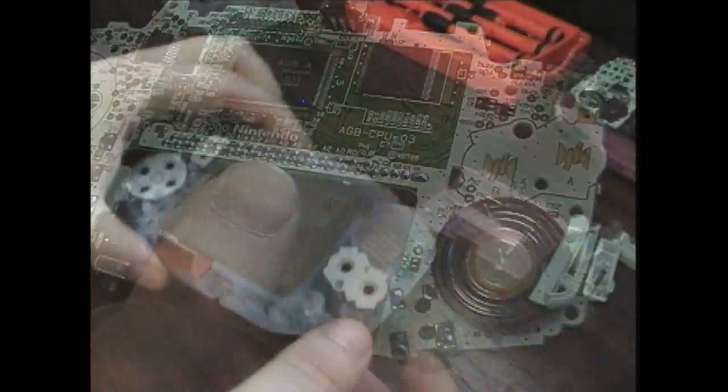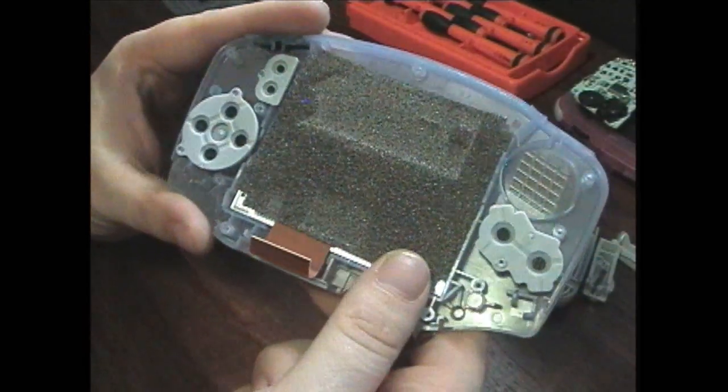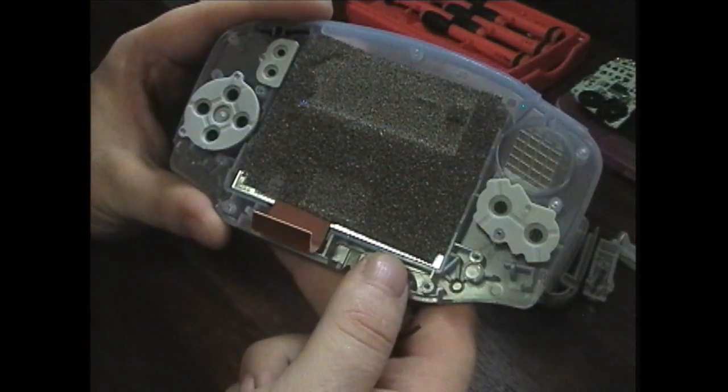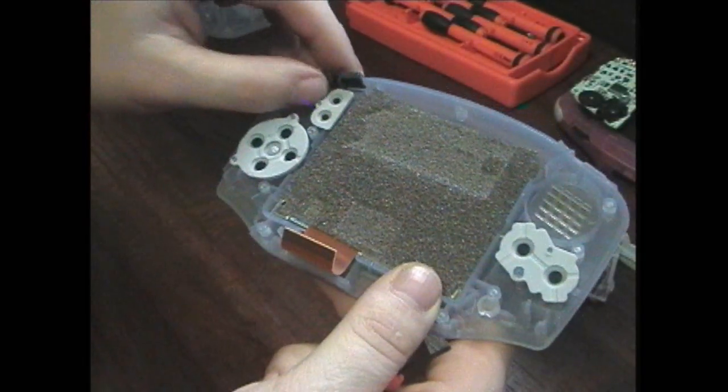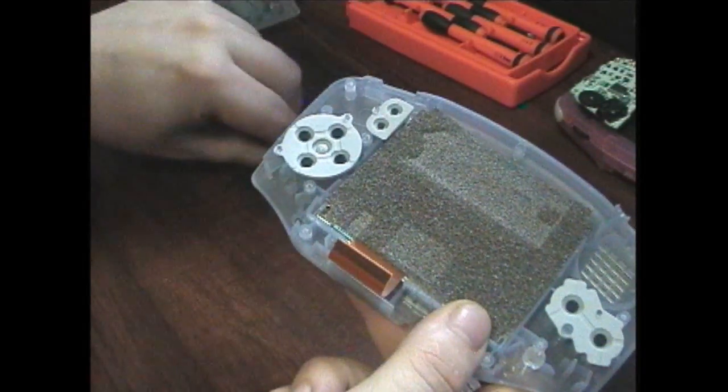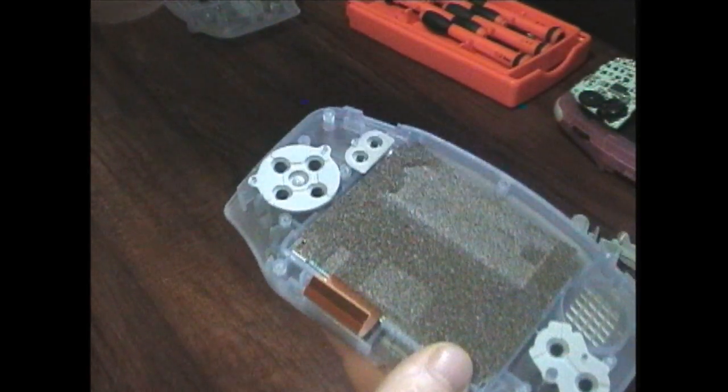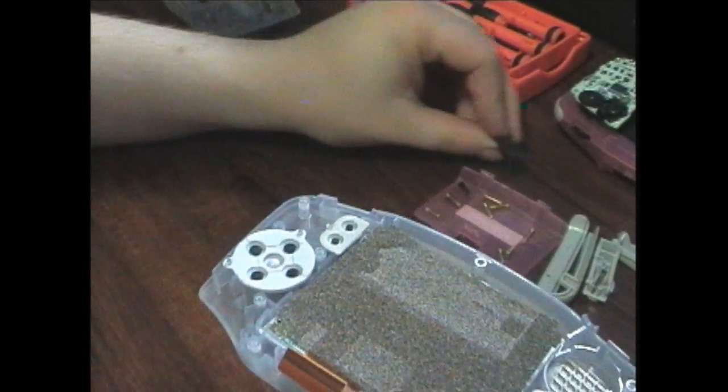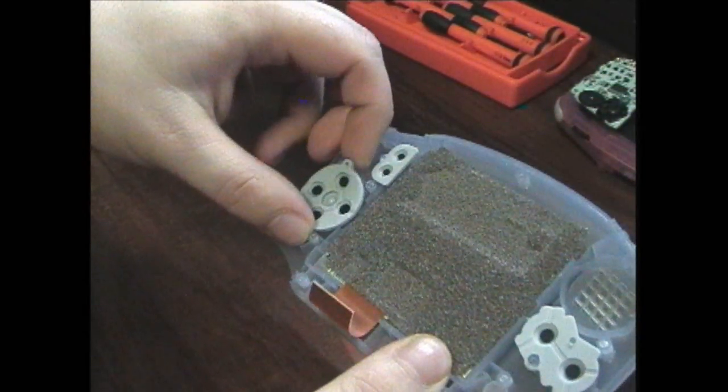You got your little speaker and processor—the CPU, Central Processing Unit I believe is what CPU stands for. Now we got this section, and these are of course your monitor and your controls. This piece right here is your power switch.